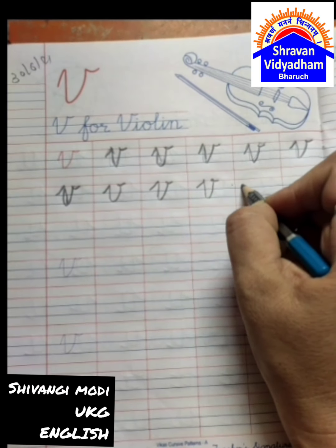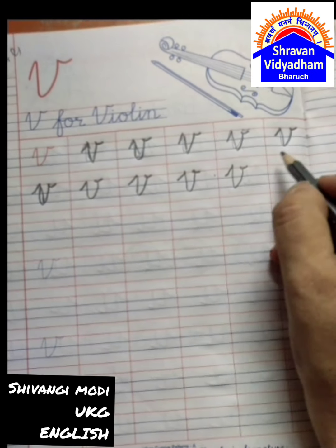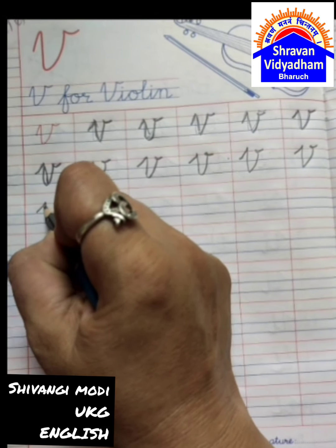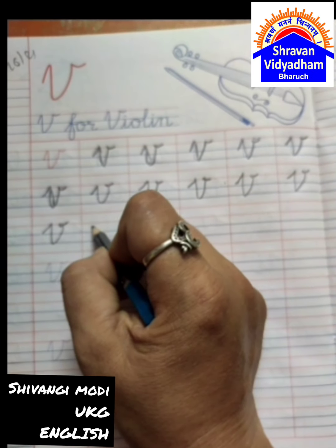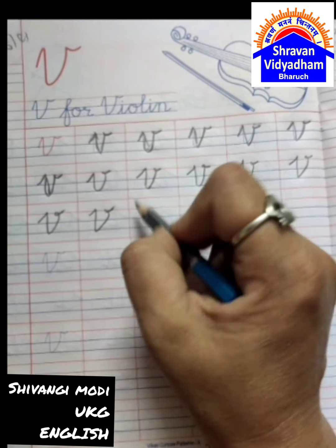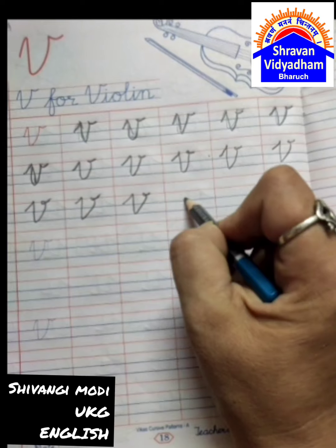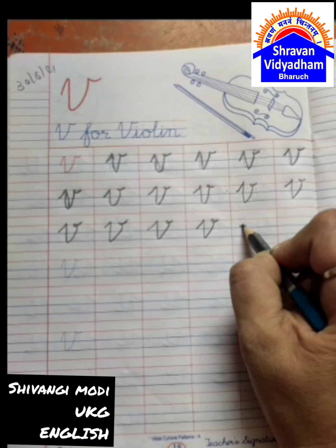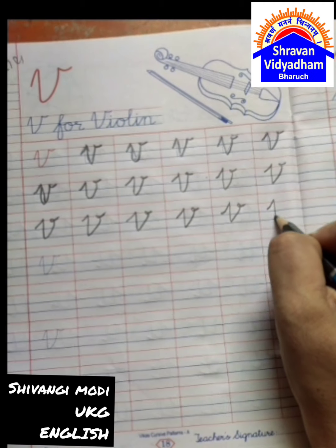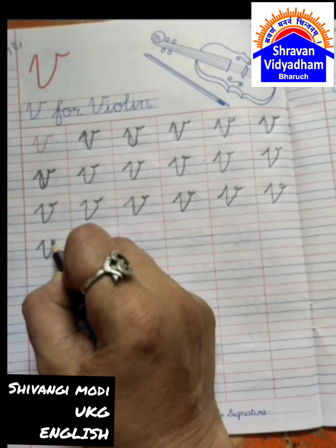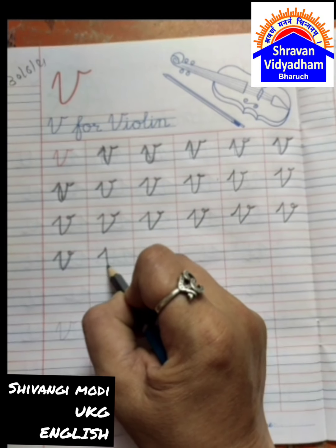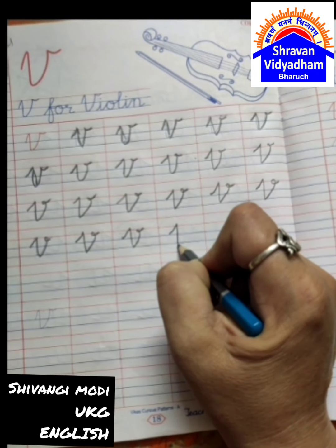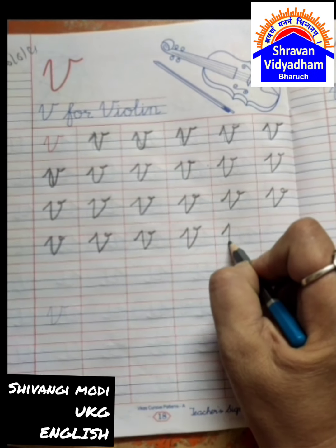V for Violin. V for When. V for Was. V for Violin. V for Was. V for When. V for Violin. V for When. V for Was. V for Violin.